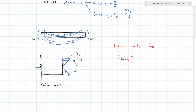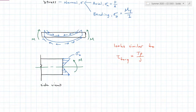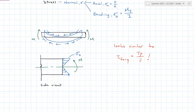The bending stress equation My/I and its triangular stress distribution look similar to torsional shear stress, which is T·rho over J. Both are rotational, both increase as we move away from a centroidal point, and both have a rotational load (M and T) and a cross-sectional geometric property — inertia for bending, polar moment of inertia for torsion. The difference is that torsional shear stress acts parallel to the surface, whereas bending stress is normal — perpendicular to the cross section.